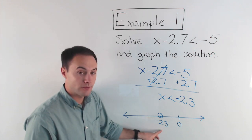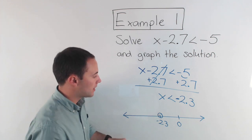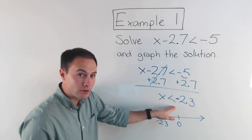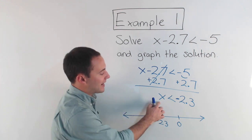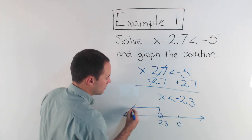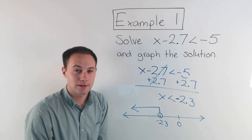That means it does not include negative 2.3. So that's really important. If it was less than or equal to, then it would. And x is less than that, so I'm going to draw my arrow going to the left. Less than.